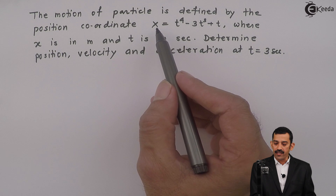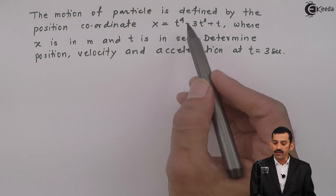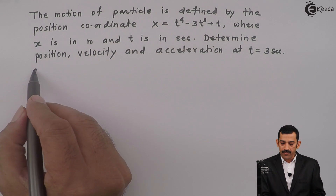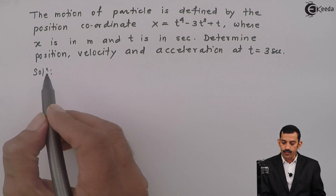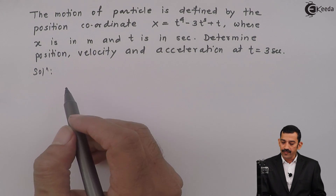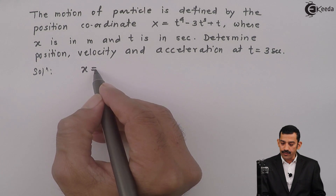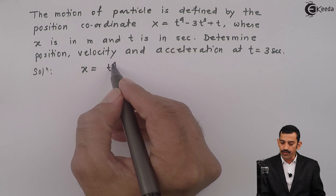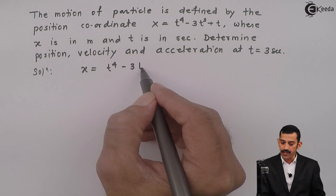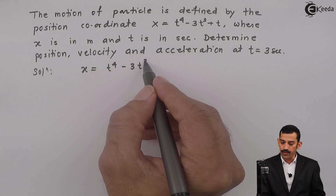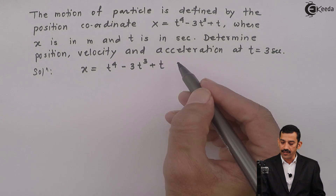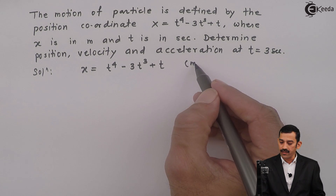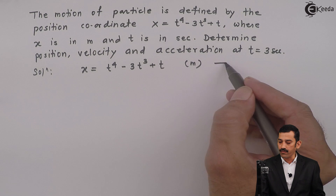In this problem, x is given as a function of time t. That means, if we write this equation — position x is equal to t raised to 4 minus 3t cubed plus t. This is in meters, and we call this equation number 1.